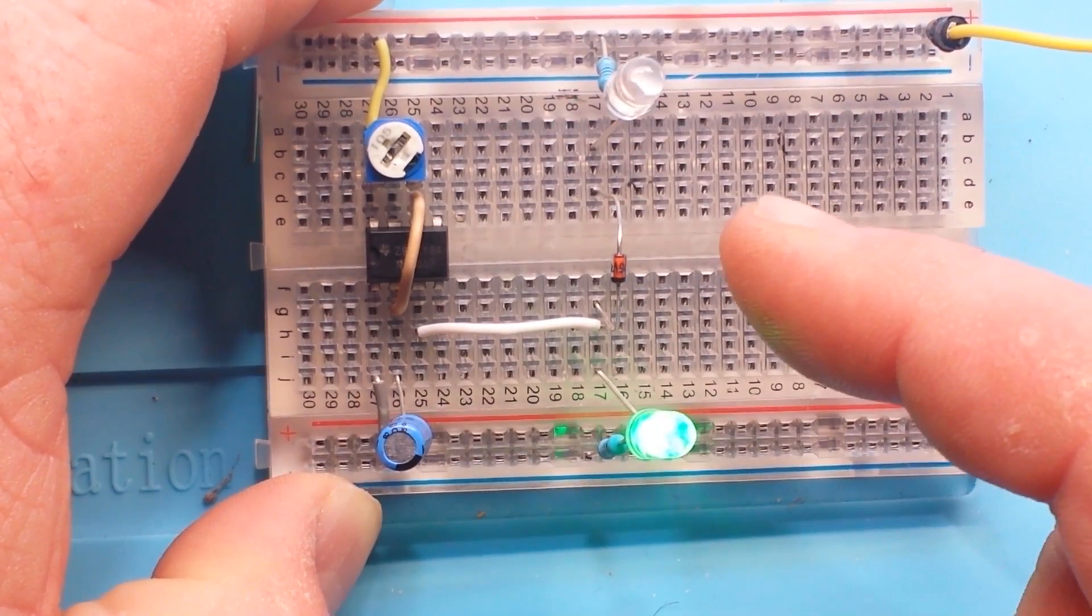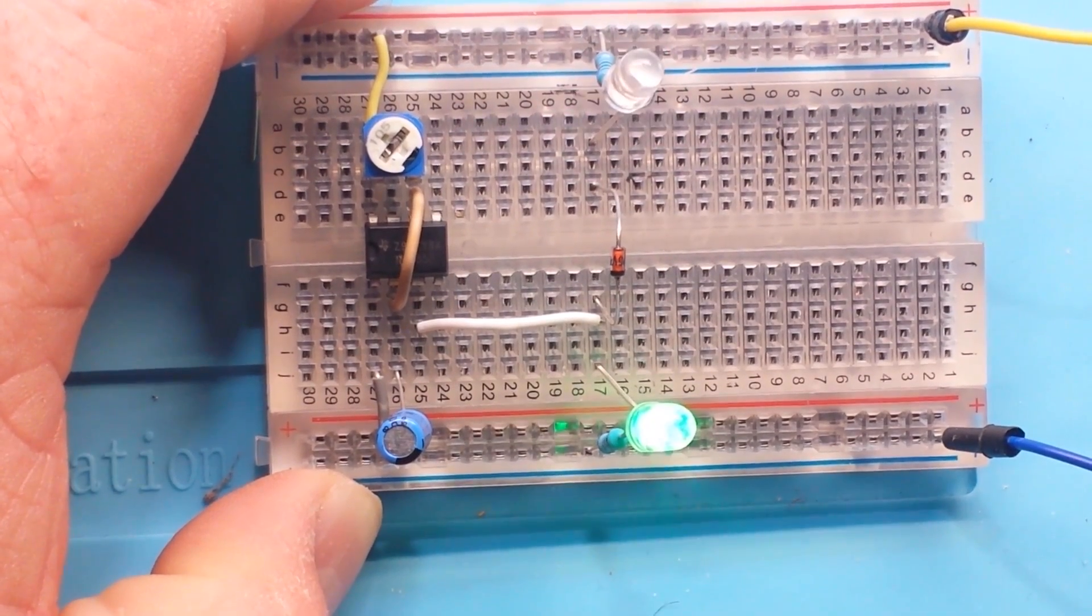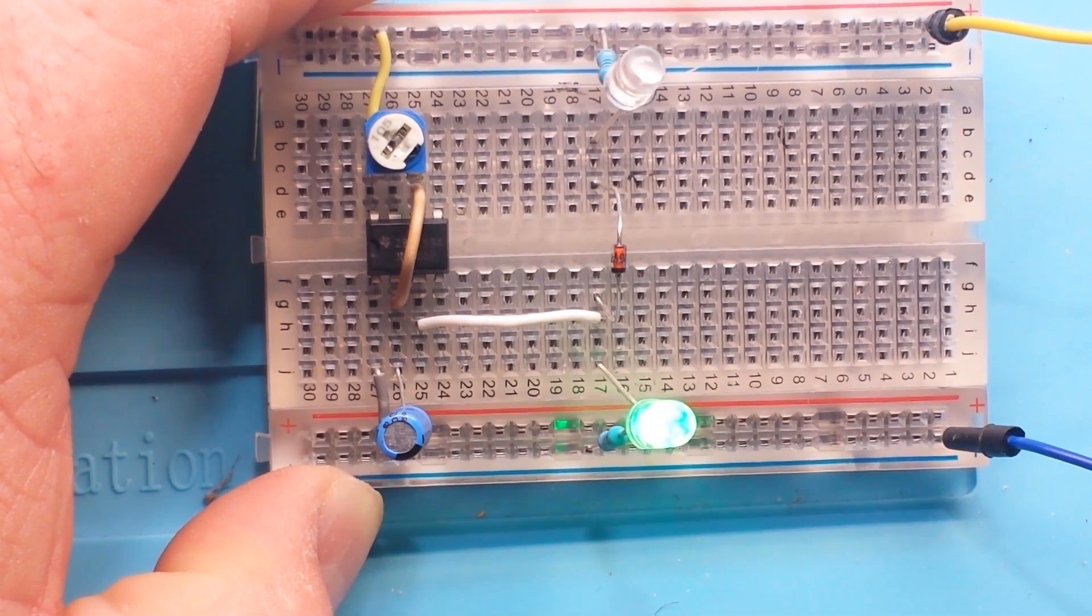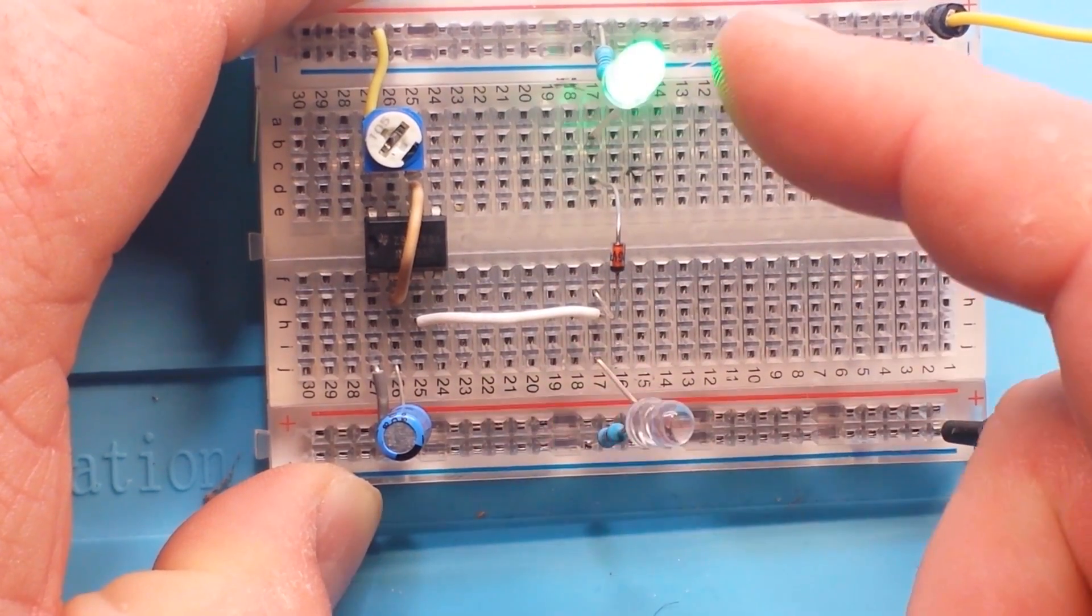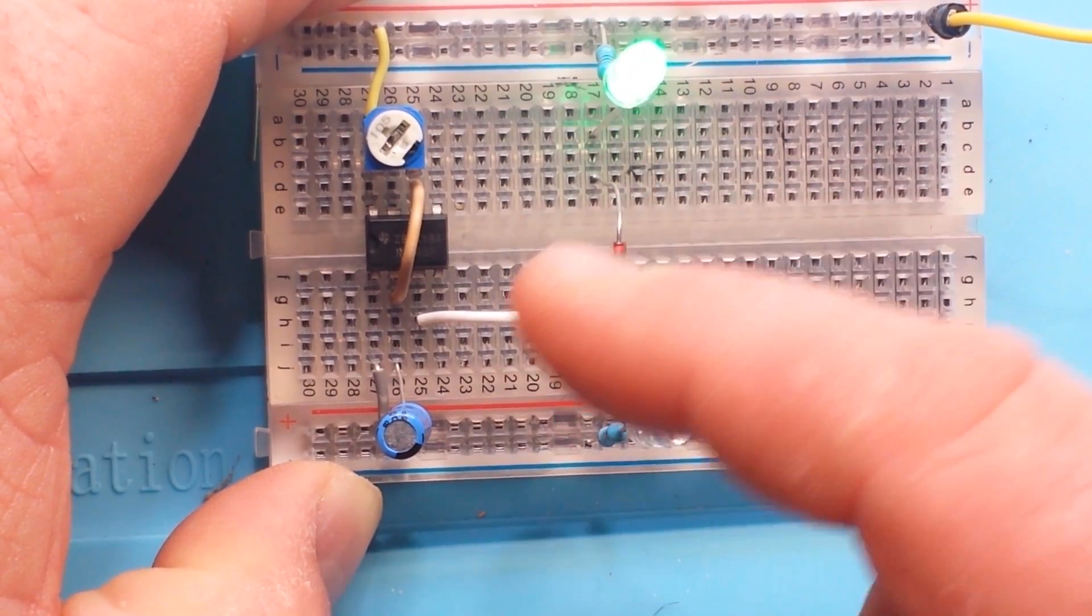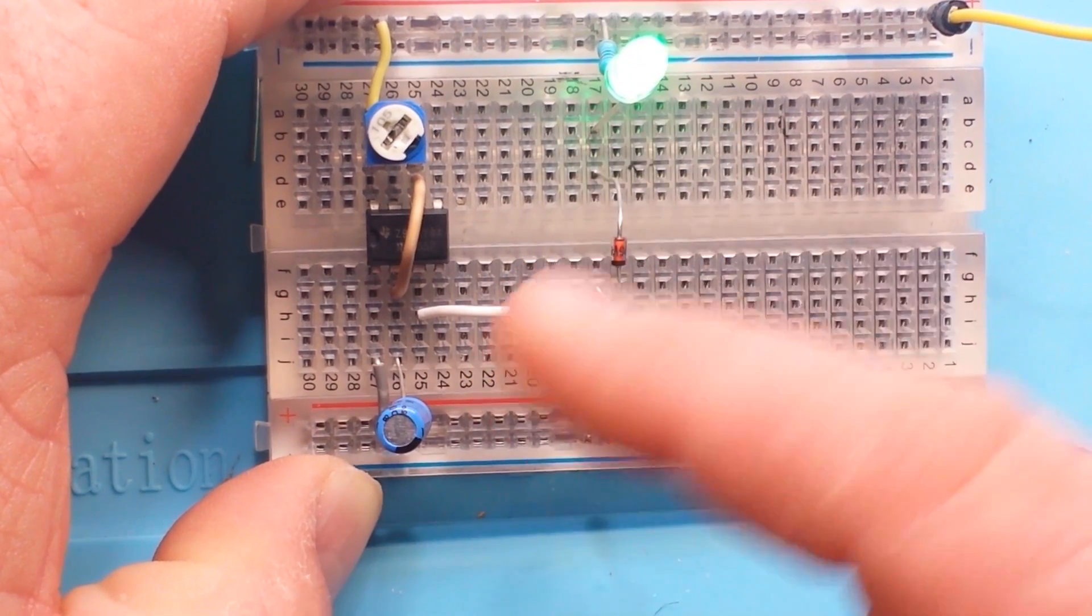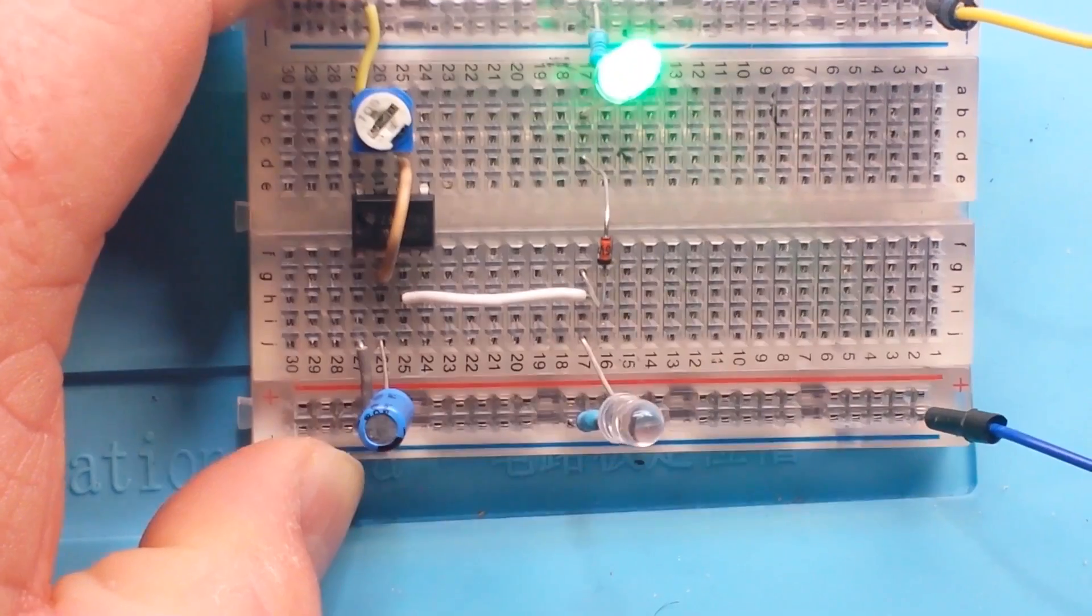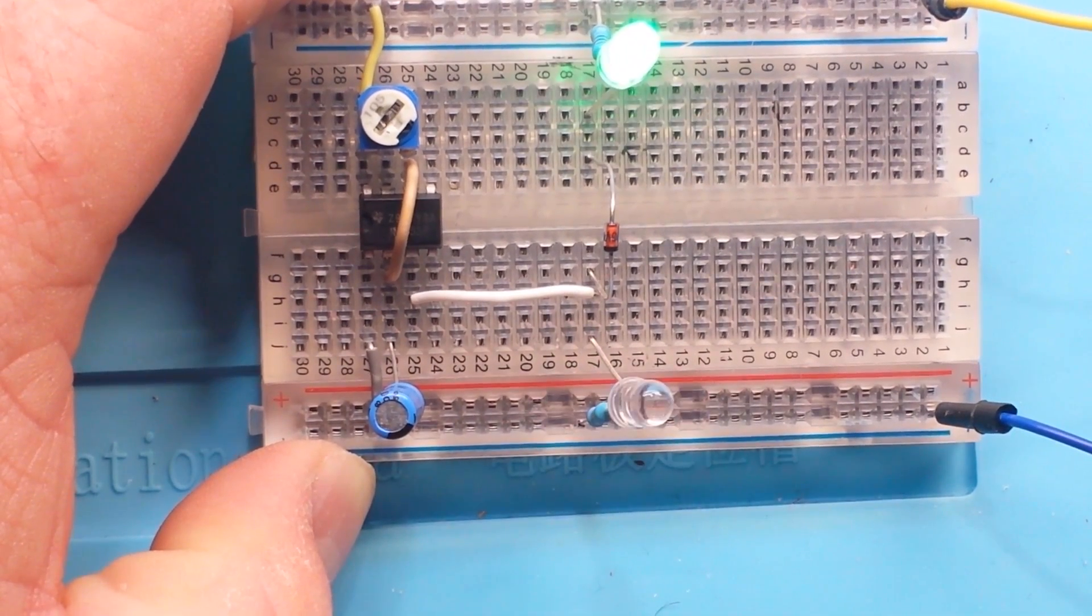What we're doing is we're taking advantage of the fact that pin 3 of the 555 timer can not only source some current, but it can also sink some current. So, since we're starting from VCC here, when the 555 goes low, we're sinking the current from this LED. And when it goes high, we're sourcing it to this LED. The diode simply prevents any backflush of current. Alright.